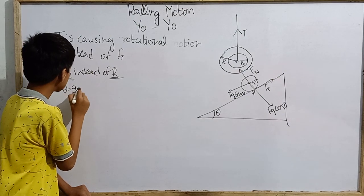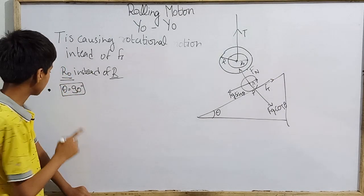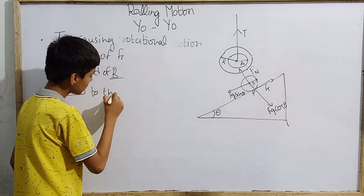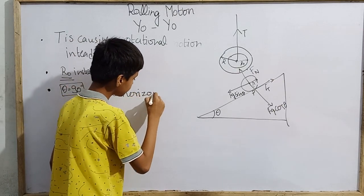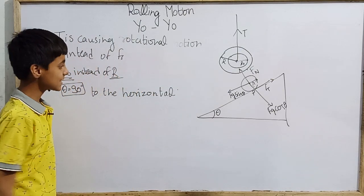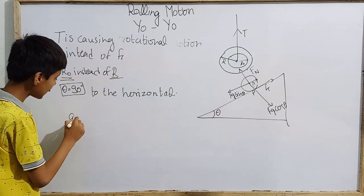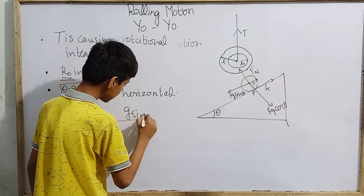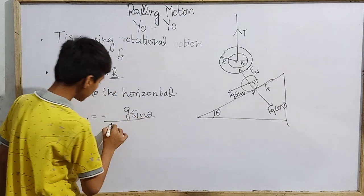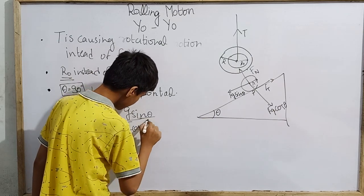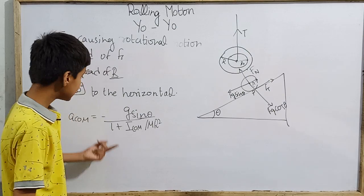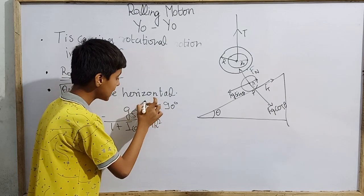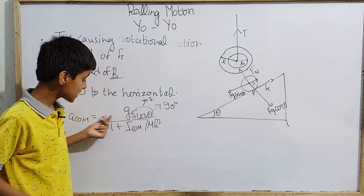The other and last important point to note is that theta equals 90 degrees. This will make everything very clear. Theta equals 90 degrees here is the right angle to the horizontal x-axis. Now I can write the equation. I wrote the equation that a of COM is minus g sine theta over 1 plus I_COM by m r square. If I want to put theta here 90 degrees.